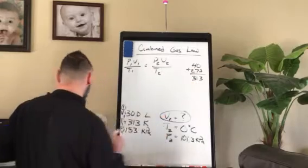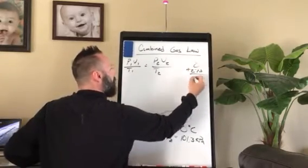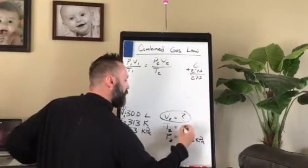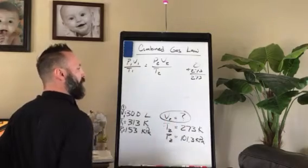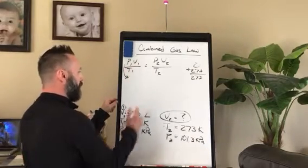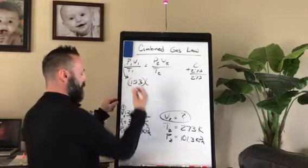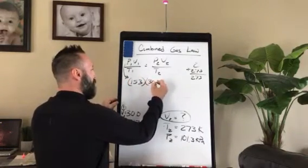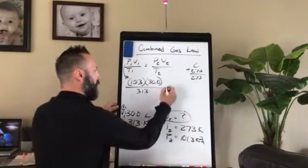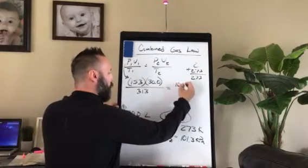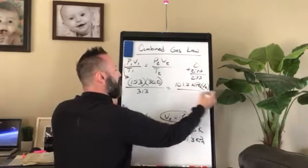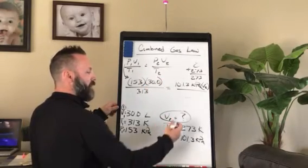T2 = 0°C + 273 = 273 K. V2 is our unknown. Plugging everything into the combined gas law: (153 × 30) / 313 = (101.3 × V2) / 273.